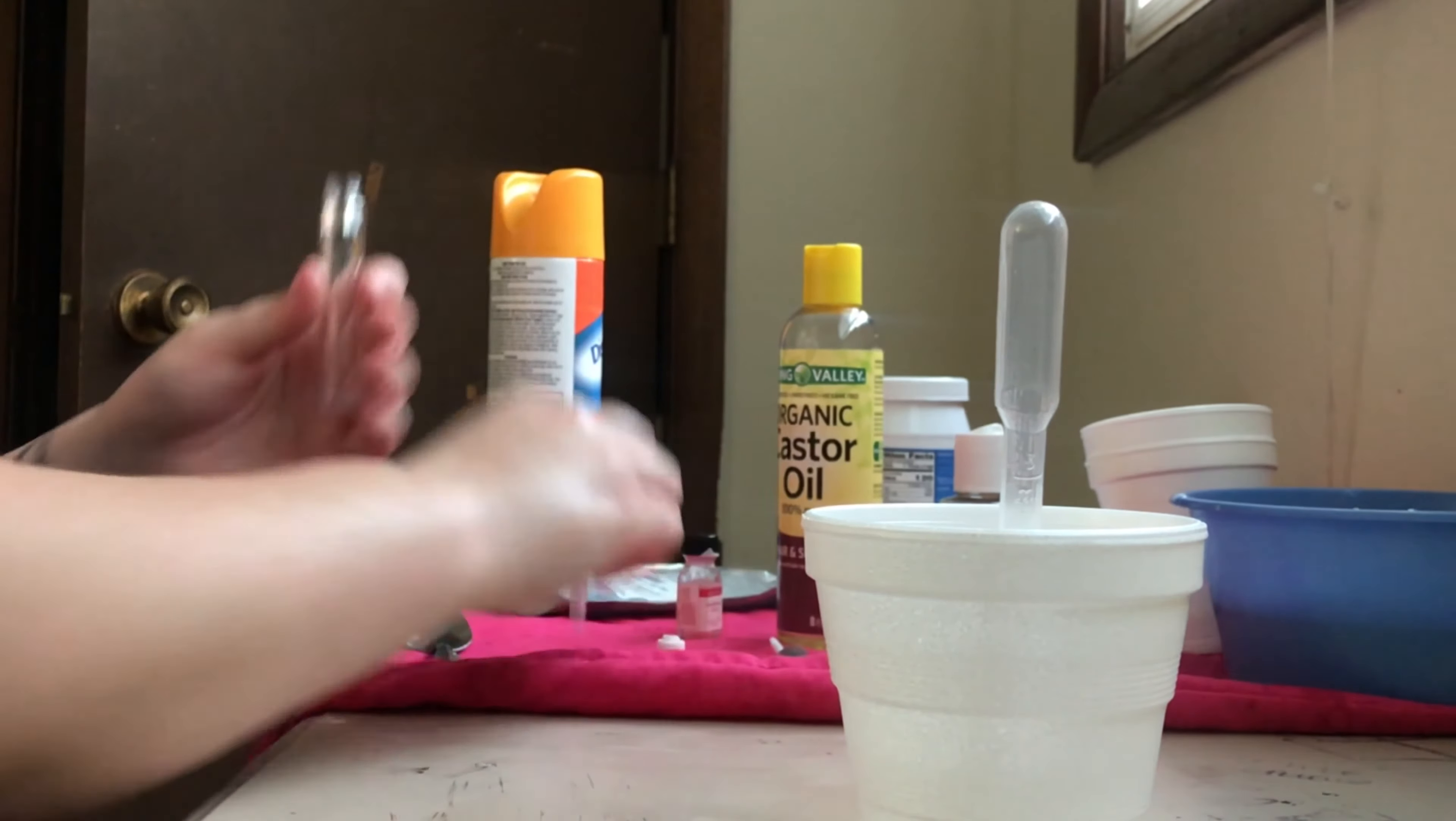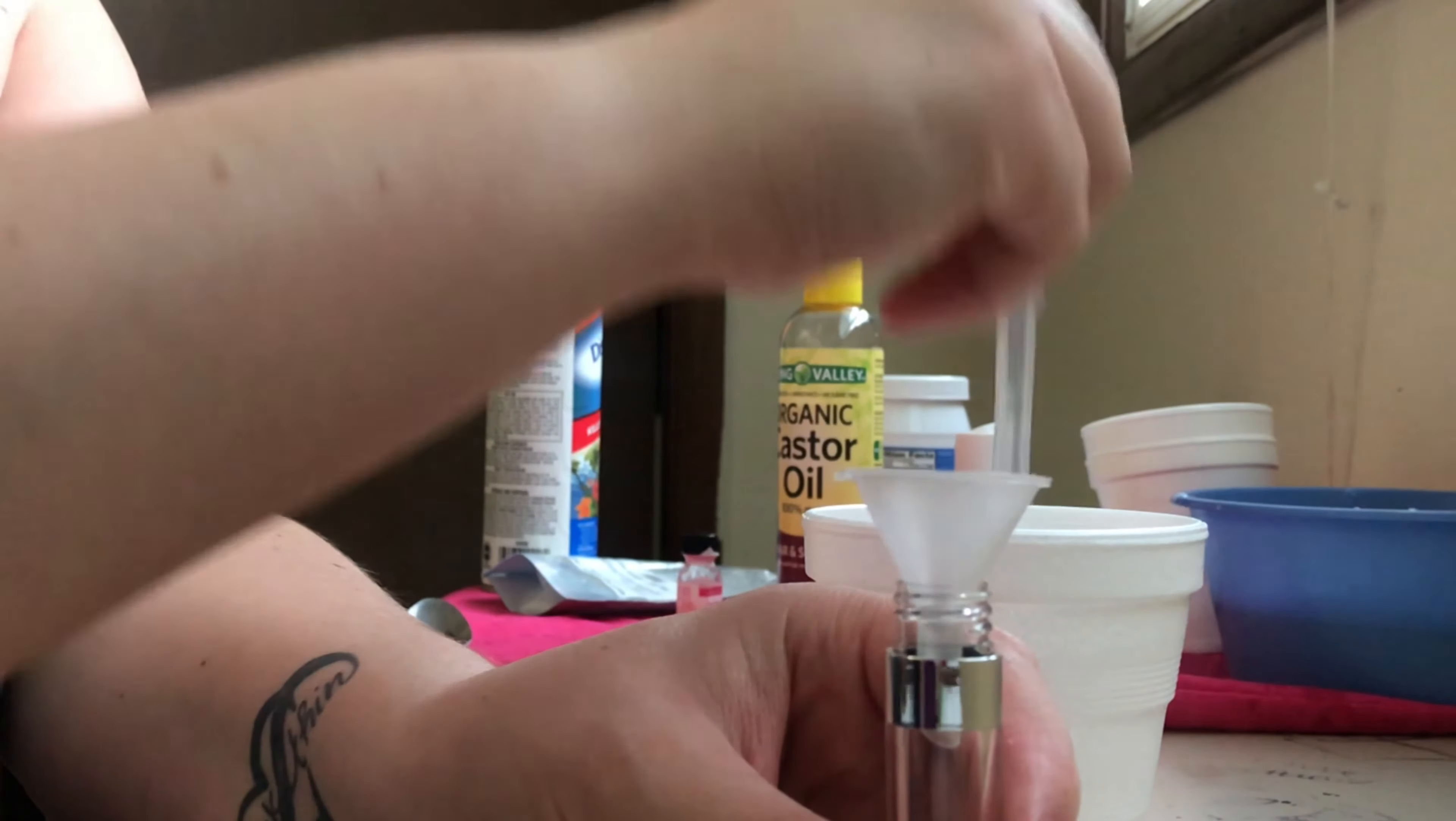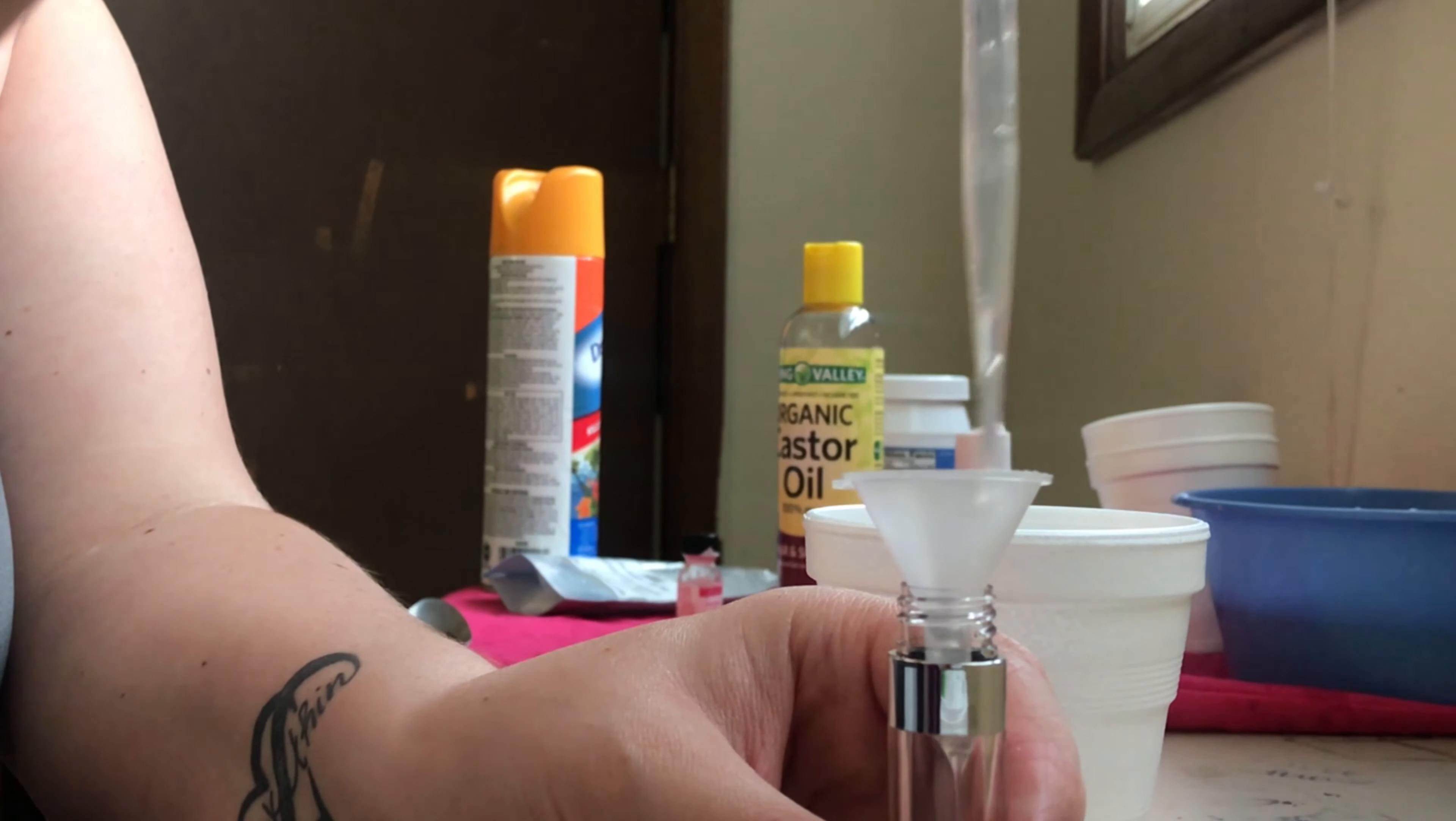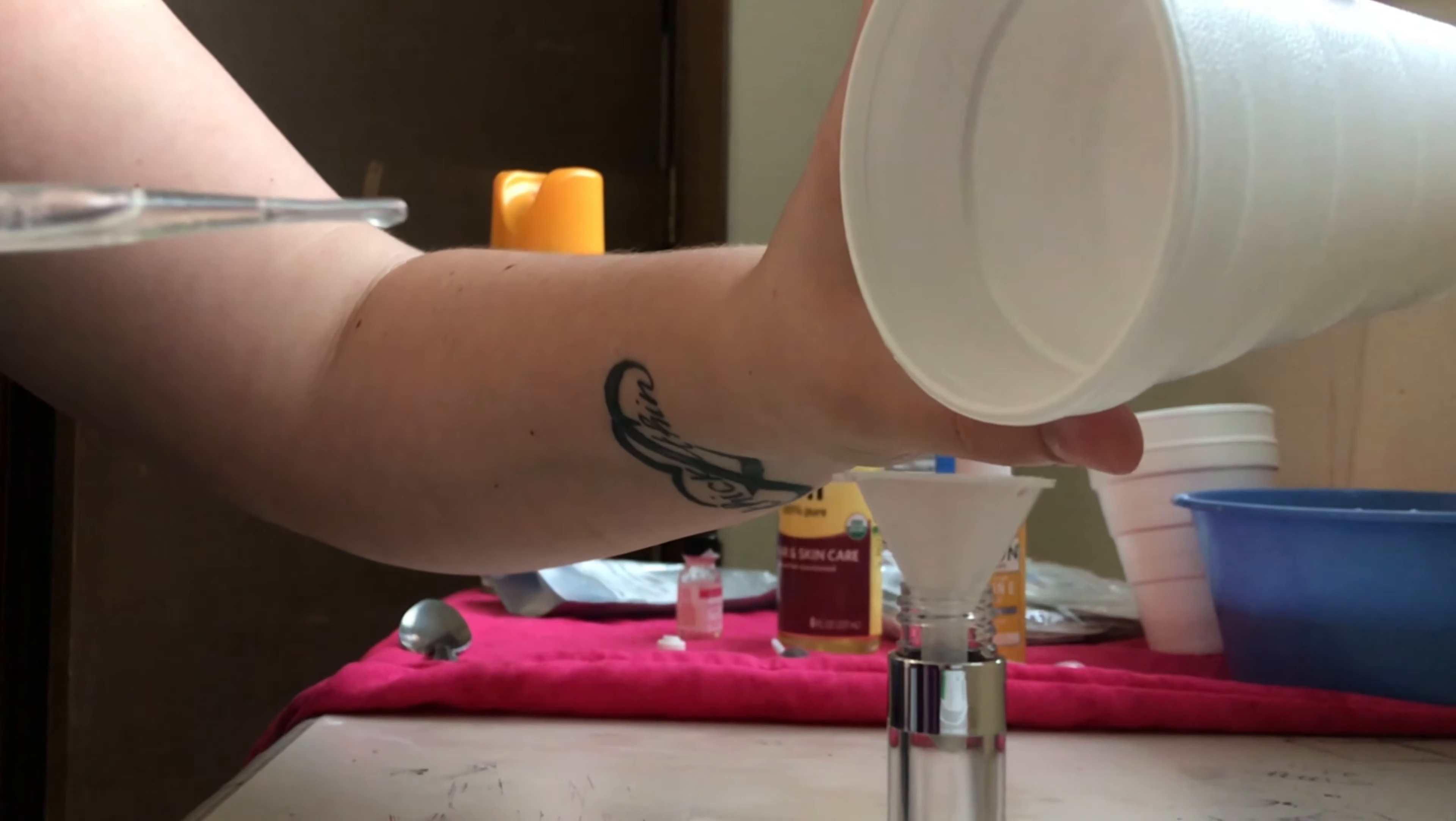You don't have to use the little funnel, this just came with my tubes. You can always just use the eye dropper to put it in there. But after doing it a few times, I realized just pouring the oil in there was a lot faster.